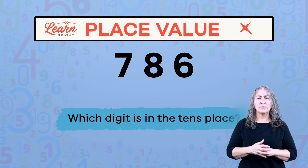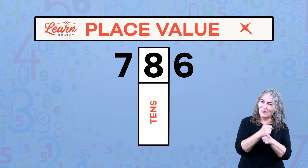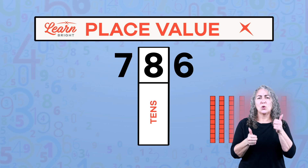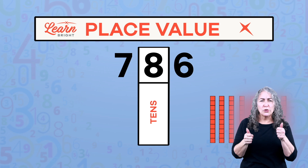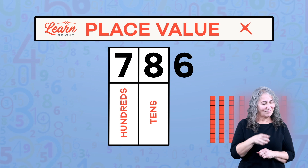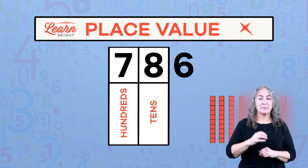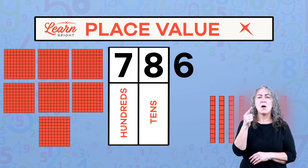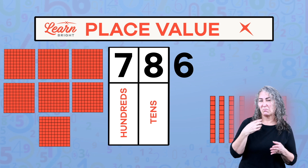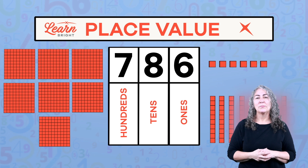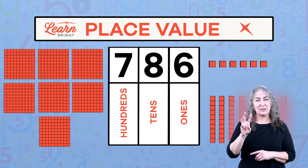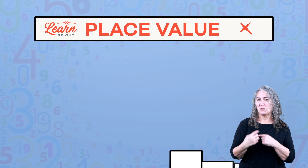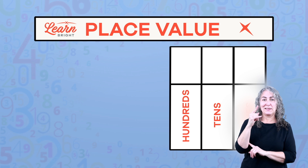Quick quiz! In the number seven hundred and eighty-six, which digit is in the tens place? Did you say eight? That's right — there are eight tens, or eighty. Which digit is in the hundreds place? Did you say seven? You got it — there are seven hundreds, or seven hundred. How many ones are there? Six! Seven hundred and eighty-six is the same as seven hundred plus eighty plus six.